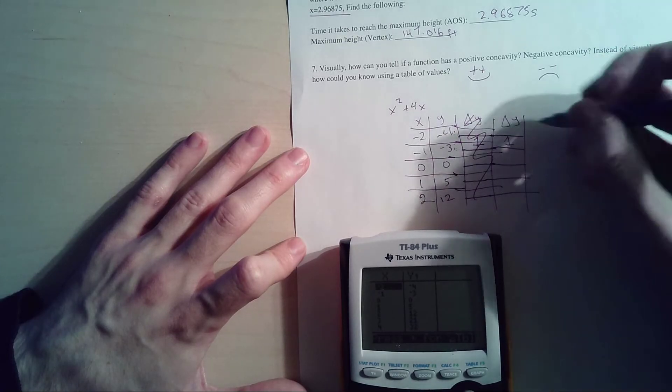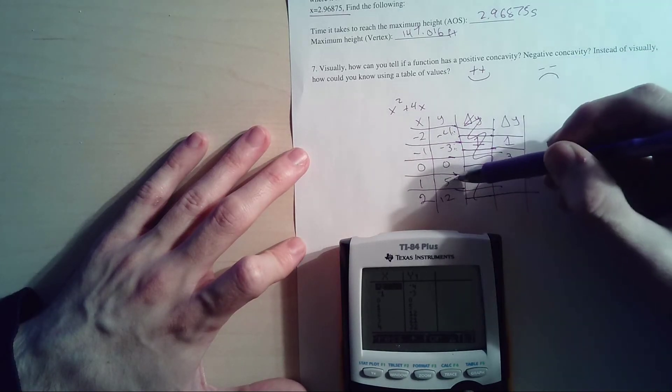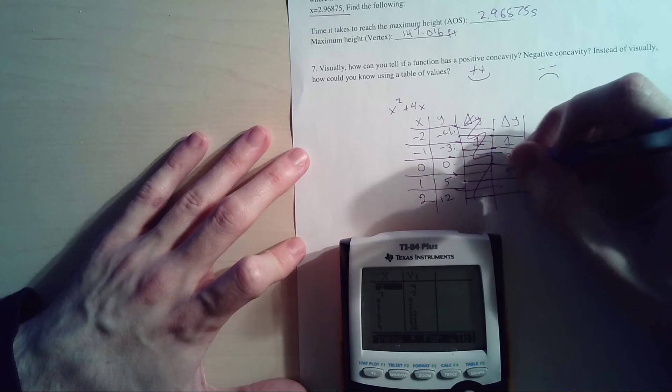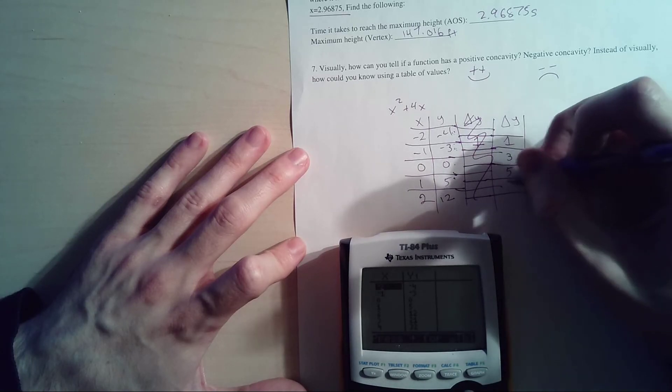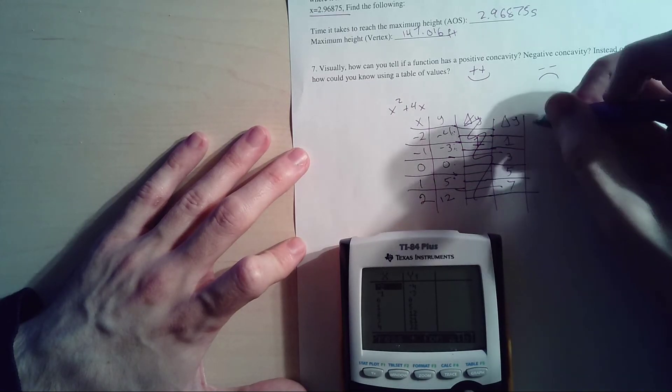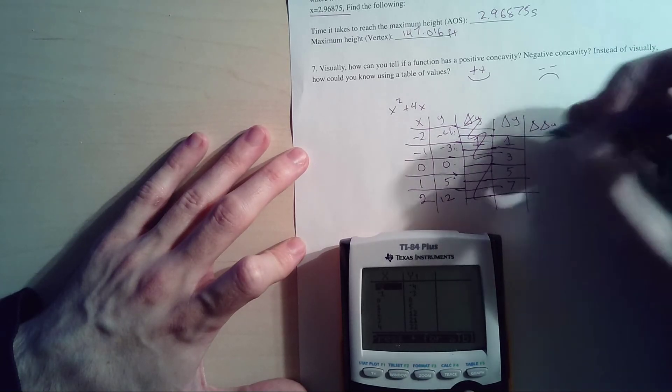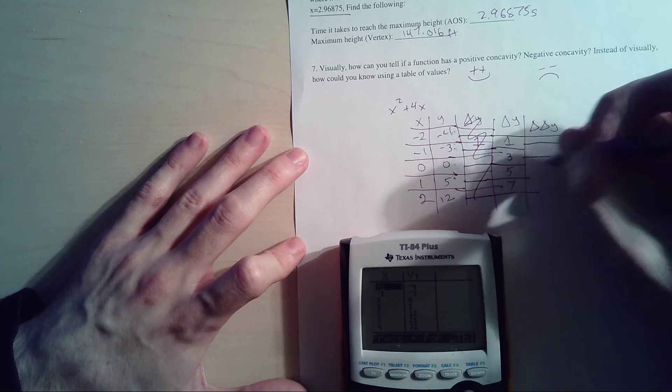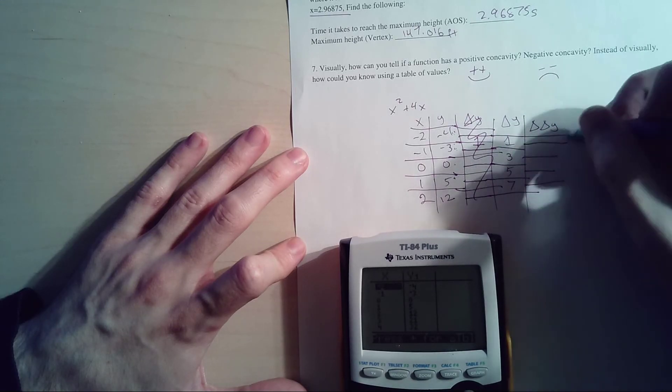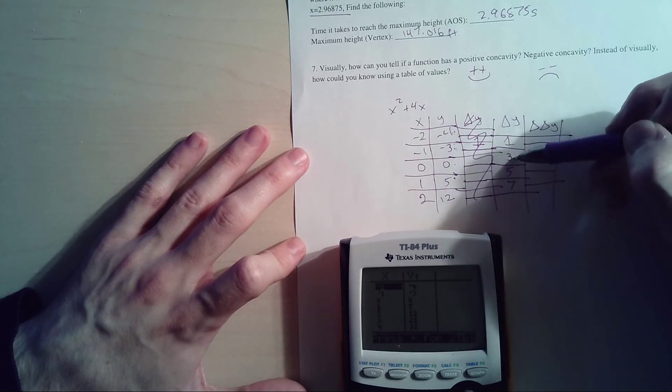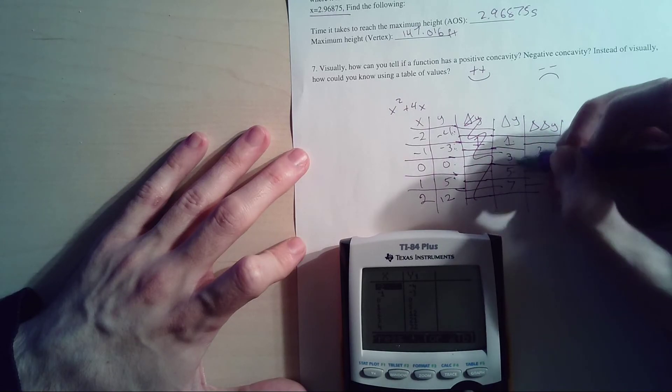My change in change in y, my delta delta y - don't screw this up this time. Oof, I did it. All right, between 3 and 1, that's 3 minus 1 is 2. 5 minus 3 is 2. 7 minus 5 is 2. This is our definition of quadratic: when the change in change in y is a constant.